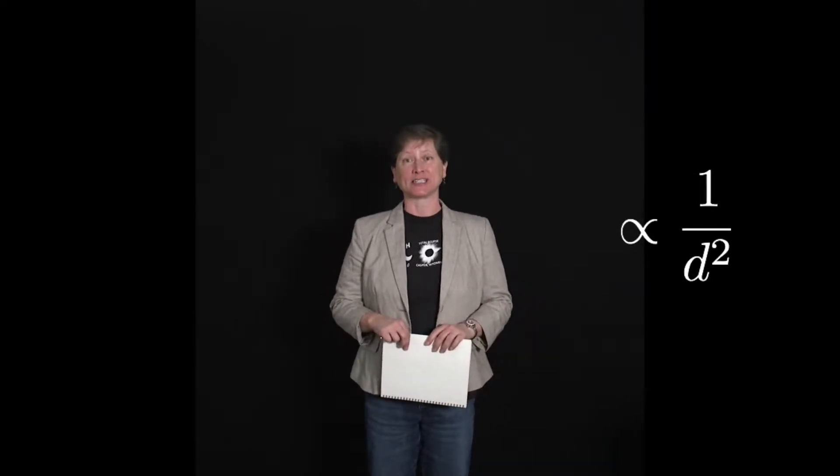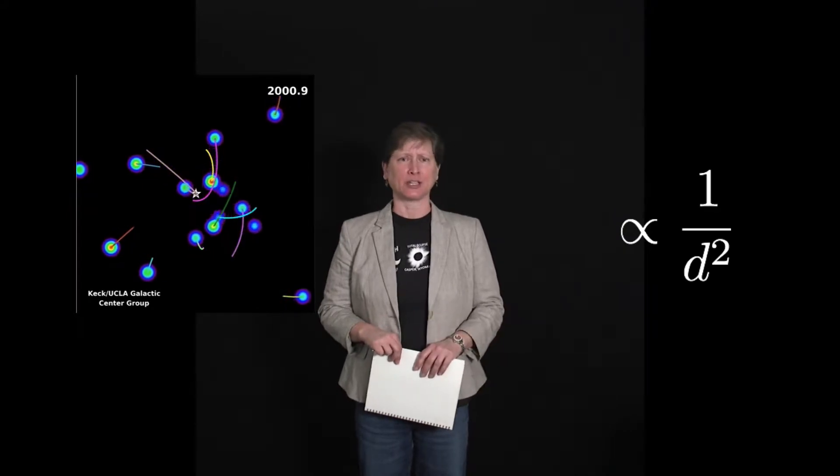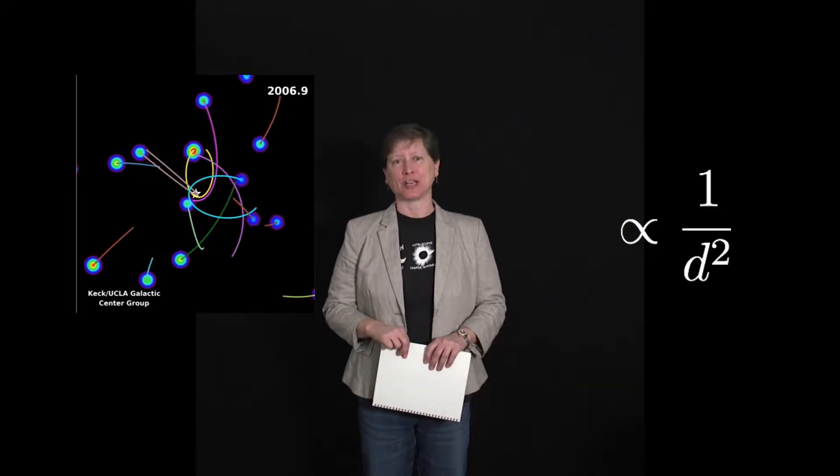We know that the mass of the object being orbited factors into the force of gravity, and we also know that the force of gravity depends inversely on the square of the distance, which is good because there's a supermassive black hole at the center of our galaxy with a mass of about 4 million times the mass of the Sun.